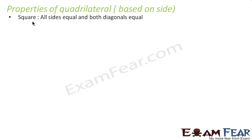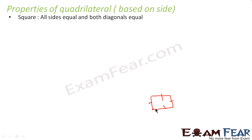For squares, all the sides are equal and both the diagonals are also equal. If you take one square, all the four sides will be equal. Also, the diagonals, if you see, they are also equal. That is the property of the square.